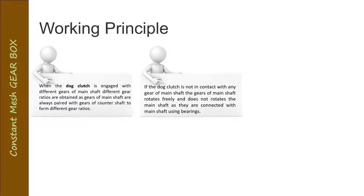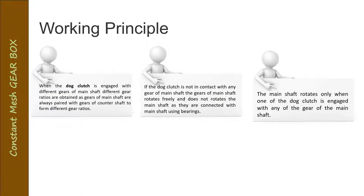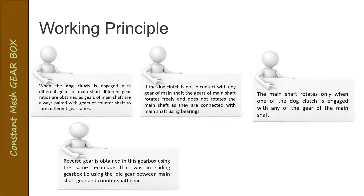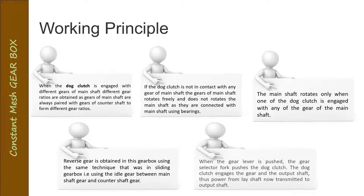Since the main shaft gears are not clamped to the shaft, they are free to move on it. So if the dog clutch is also not in contact, none of the gears will rotate the main shaft. The main shaft rotates only when one of the two dog clutches is engaged. Reverse gear is obtained using an idler gear, the same technique as in the sliding mesh gearbox. When the gear lever is pushed, the selector fork pushes the dog clutch, which engages the gear and the output shaft transmits power to the differential.